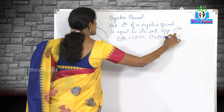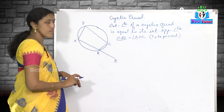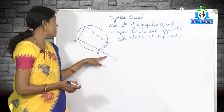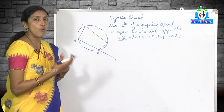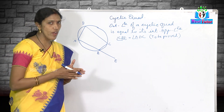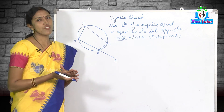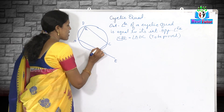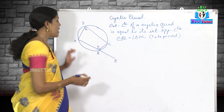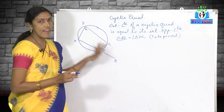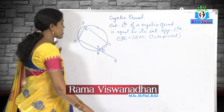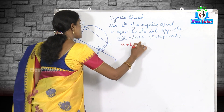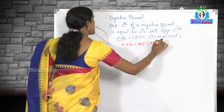What is given: a cyclic quadrilateral with an exterior angle. What is to be proved: the exterior angle CBE equals its interior opposite angle ADC. Let me assume angle ADC is 'a', angle ABC is 'b', and the exterior angle CBE is 'c'. I need to prove that 'a' equals 'c'.